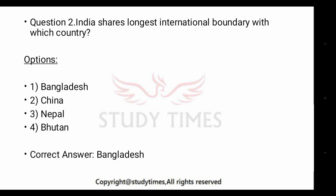Next question: India shares its longest international boundary with which country? The answer is Bangladesh, because the boundary between India and Bangladesh is 4096 kilometers. Then comes China, and after that Pakistan. The shortest international boundary is with Afghanistan — only 106 kilometers. The borderline between Bangladesh and India is called Pulbarchal, and the borderline between China and India is called the McMahon Line.